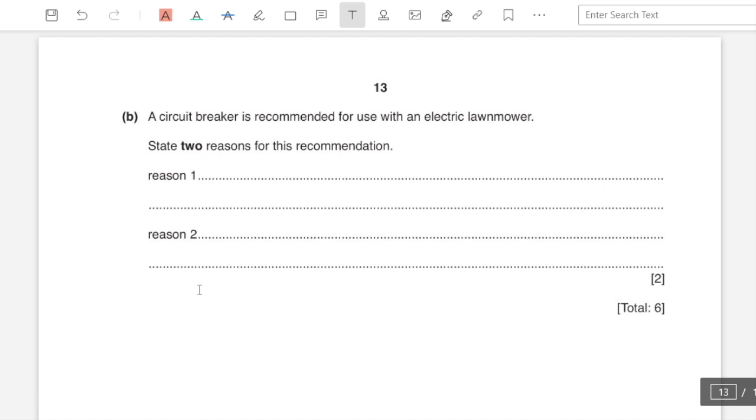Part b: a residual current circuit breaker is recommended for use with an electric lawnmower. State two reasons for this recommendation. It can be reset once it has been used, the switch is quite easier than using a fuse. Reason two is that it gives quick responses.